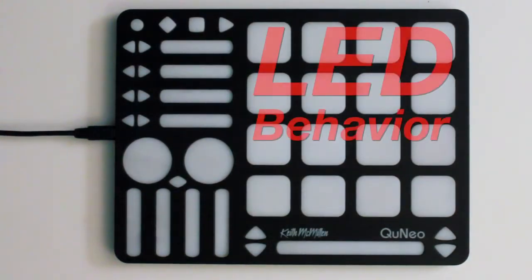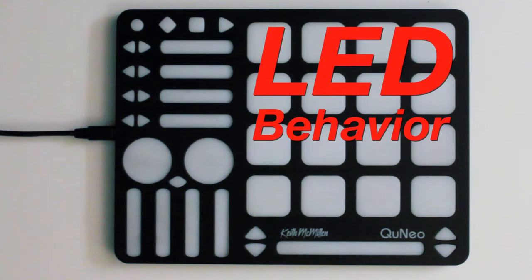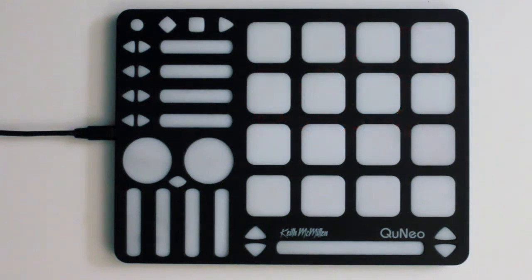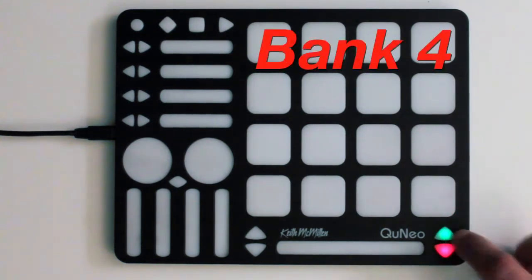The LEDs on the buttons will behave in various ways when bank mode is enabled. In bank 1, the up-down buttons will not light. In bank 2, the top button will light. In bank 3, the bottom button will light. And in bank 4, both buttons will light.